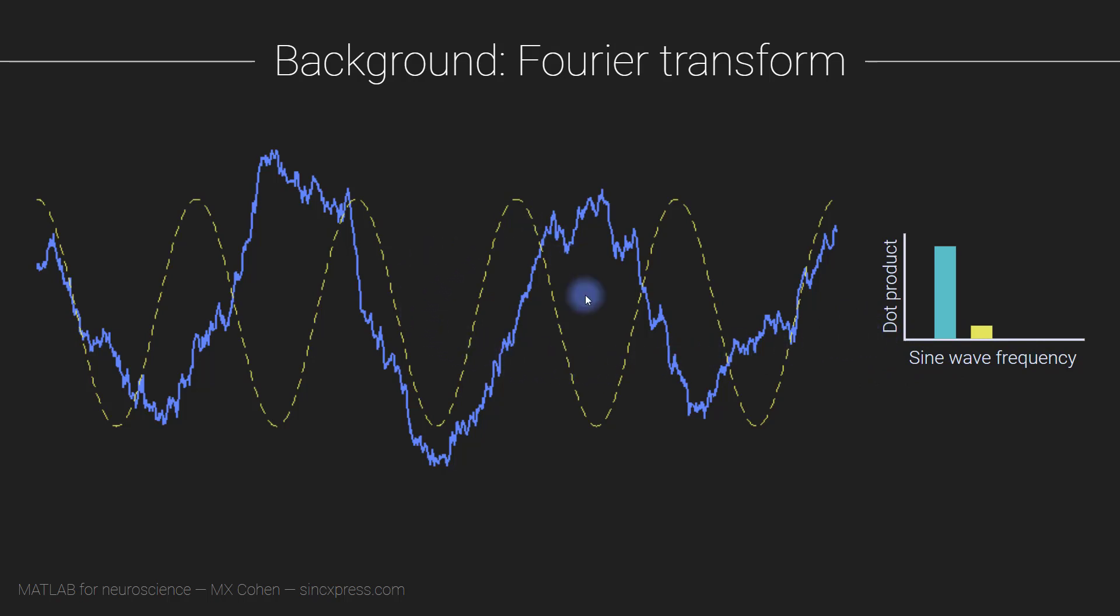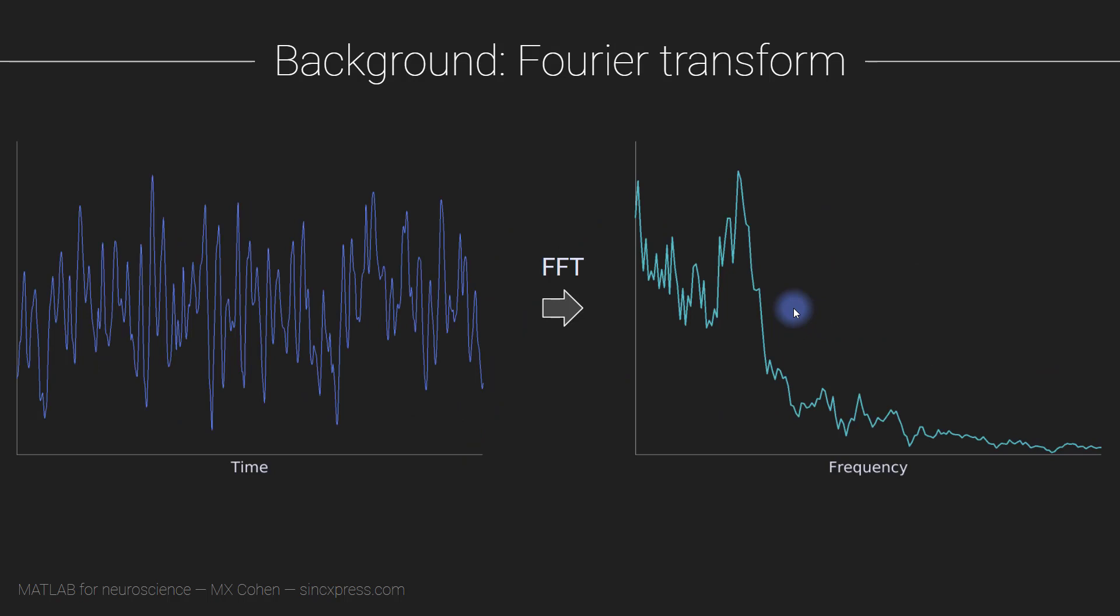And after repeating this procedure for many, many different sine waves for many, many different frequencies, we end up with a spectrum that looks something like this. So this is the signal in the time domain, and this is what its power spectrum looks like in the frequency domain.